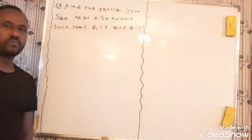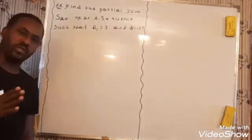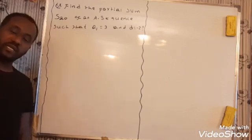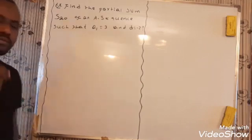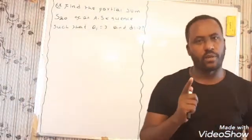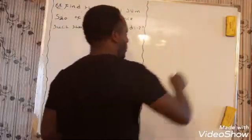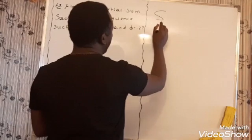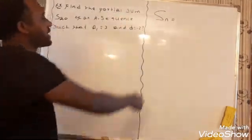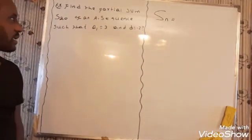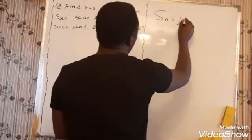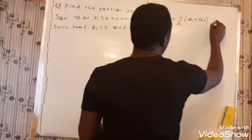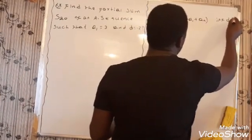How are we going to solve this problem? In order to find the solution, it is necessary to remember how we are going to find the partial sum of any arithmetic progression. The partial sum for any arithmetic progression is given by: the sum of the first N terms of the sequence, which is given by N over 2 times (A1 plus AN).